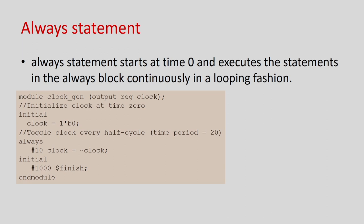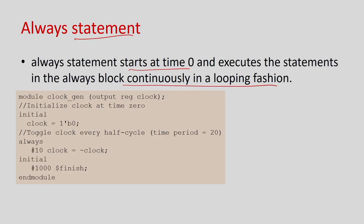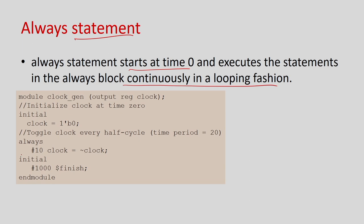The other type of procedural block is always. Multiple always blocks all start at time 0, just like initial, but while the initial block executes only once, the always block repeats infinitely until you stop the simulation. We must have some timing or event control — otherwise it becomes an infinite loop. The syntax is similar: use always with begin...end for multiple statements, and begin...end can be omitted for a single statement.